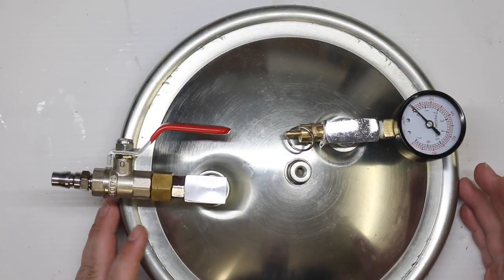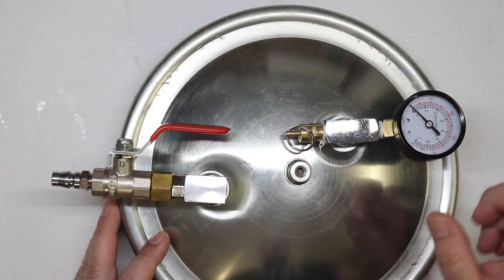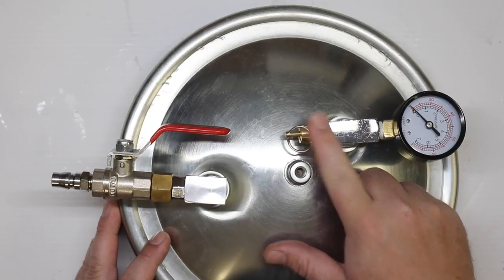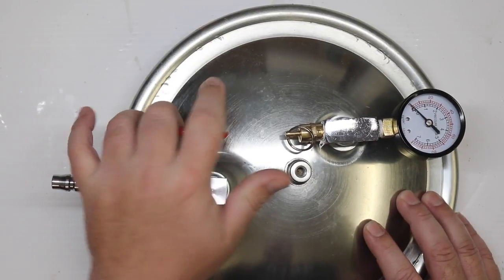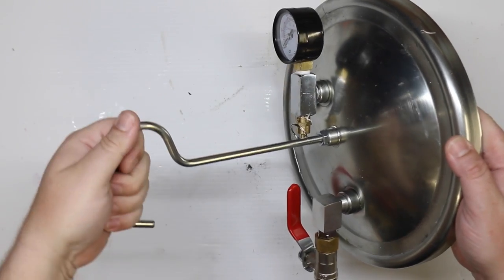So you can see how easy this is to modify. Just take the regulator off, put your pressure gauge on and your relief valve. And on your inlet side, all you need is your air adapter and your ball valve. They even gave me this cool handle to screw on the top.